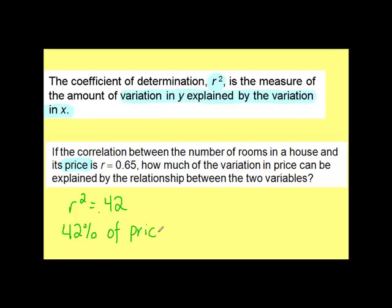So 42% of the amount of variation in price is explained by the amount of variation in X. X is represented by the number of rooms in a house. So 42% of the price is explained by the number of rooms.